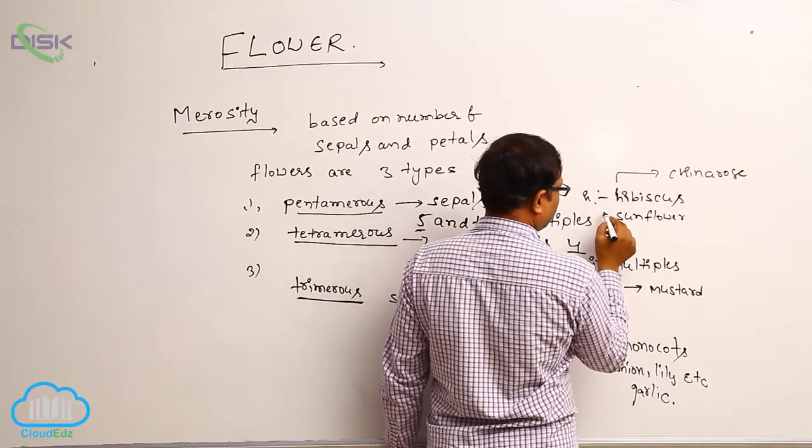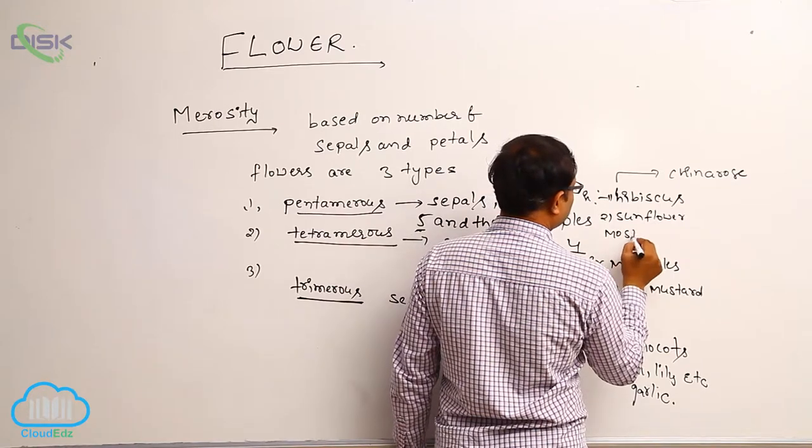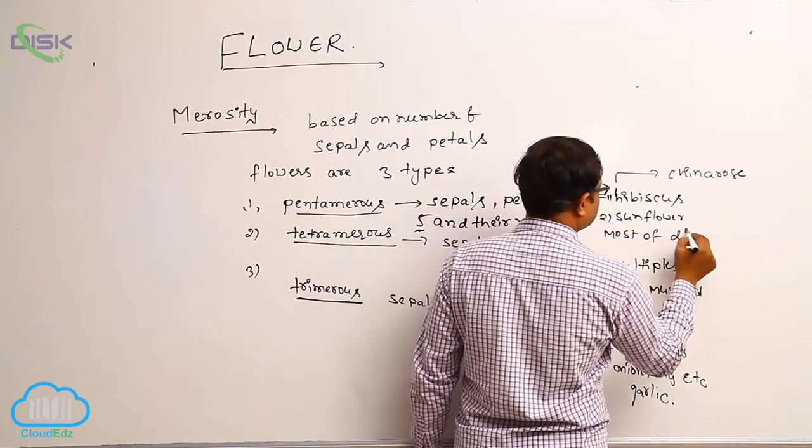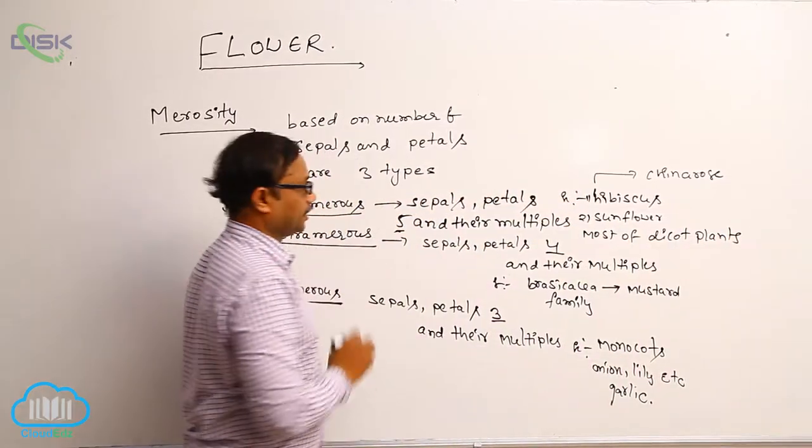And second one is sunflower. It means most of dicot plants having pentameras condition.